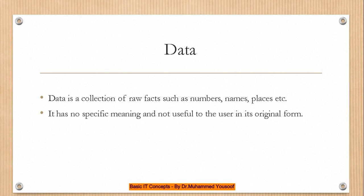You have been studying about data. What is data? Data is a collection of raw facts — it can be a collection of numbers, names, places, etc. The only thing is that there is no specific meaning and it is not useful to the user in its original form. For example, a number like 2016-00123 — somebody can think it is a telephone number, somebody may imagine it is a bank account number, somebody in the university may think it is a student's university ID. So there is no specific meaning you can attach to this — this is called a raw fact.